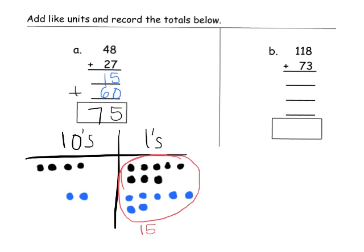And then we can see that four tens plus two tens equals sixty. So we have sixty plus fifteen — that gives us seventy-five. So we can see why these are connected this way.